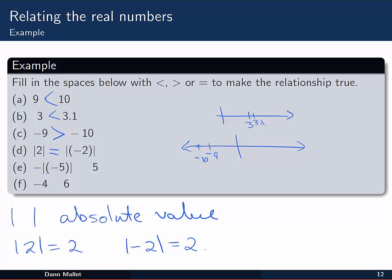Now this next one here, in E, we've got the negative of the absolute value of negative 5. Well, the absolute value of negative 5 is 5. But then we've got this extra negative sitting out the front. So we're going to have minus 5. And minus 5, of course, is less than 5.